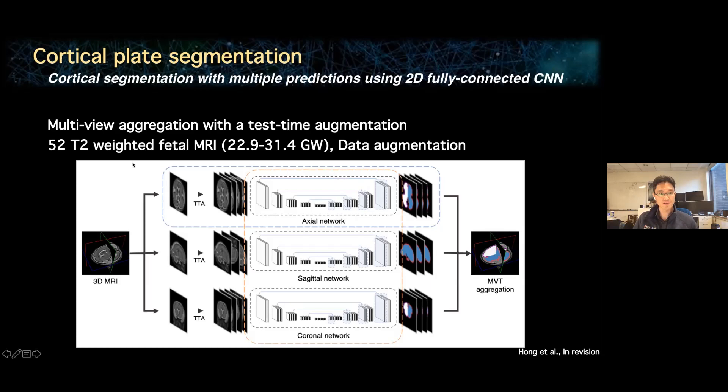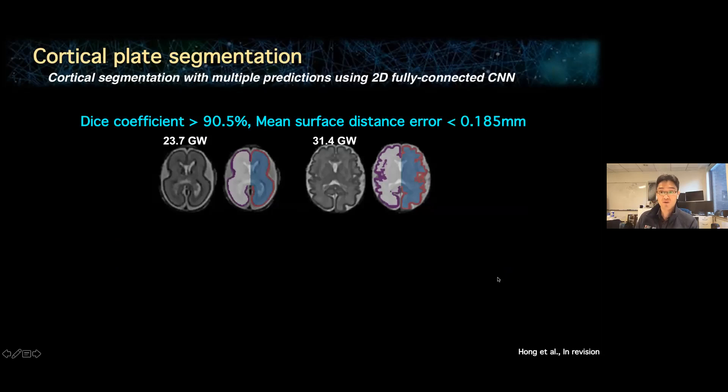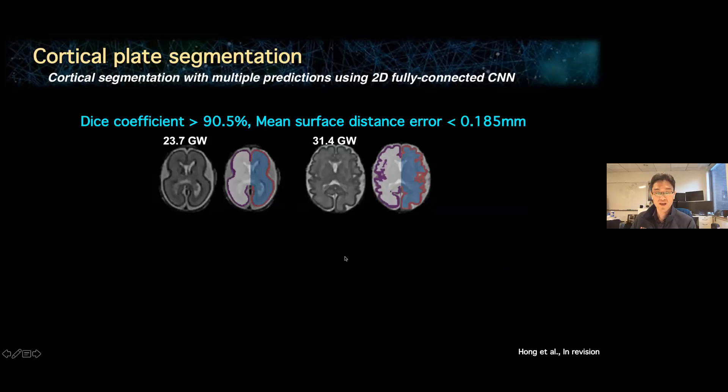This model was trained using 52 fetal MRI datasets and the results are very good. The accuracy of our automatic cortical segmentation shows a DICE coefficient higher than 90% and a mean surface distance error of less than 0.185 millimeters. When compared with other automatic fetal cortical segmentation methods, our approach shows higher DICE coefficient and lower mean surface distance error.